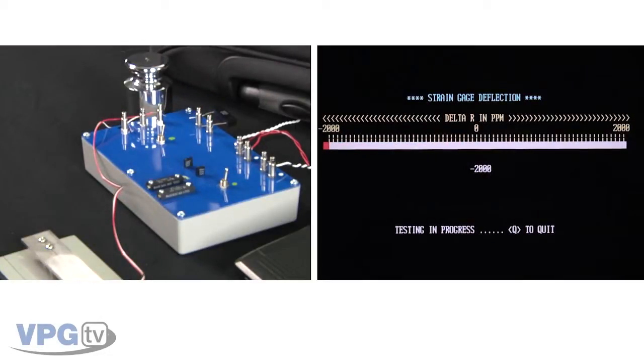Exactly negative 2,000 ppm. I have just verified that my circuit can accurately detect any changes in resistance of the strain gauge when it is under load.